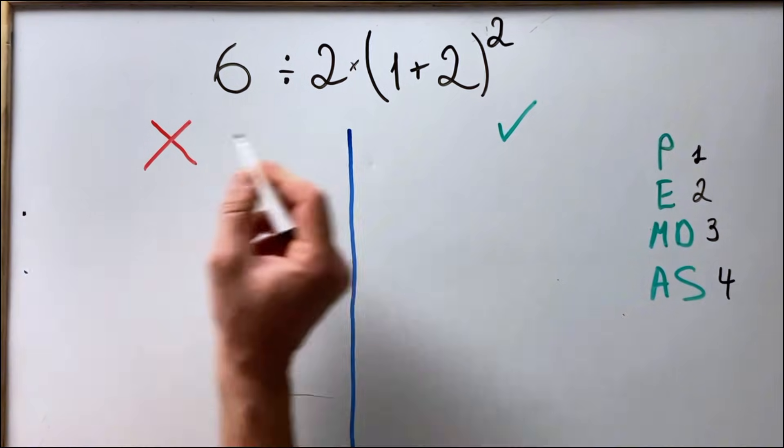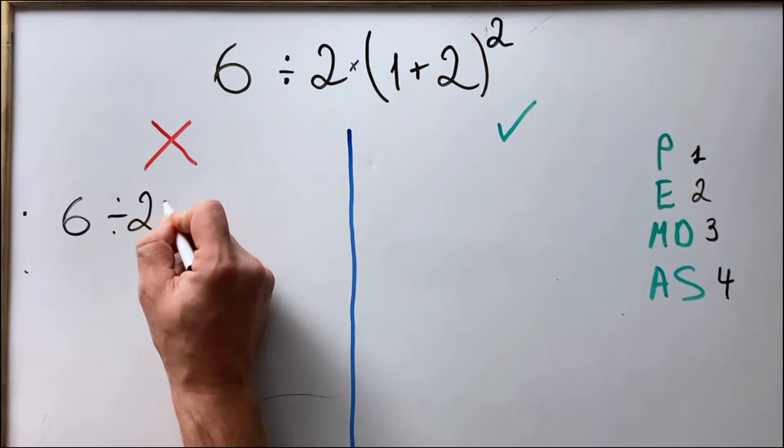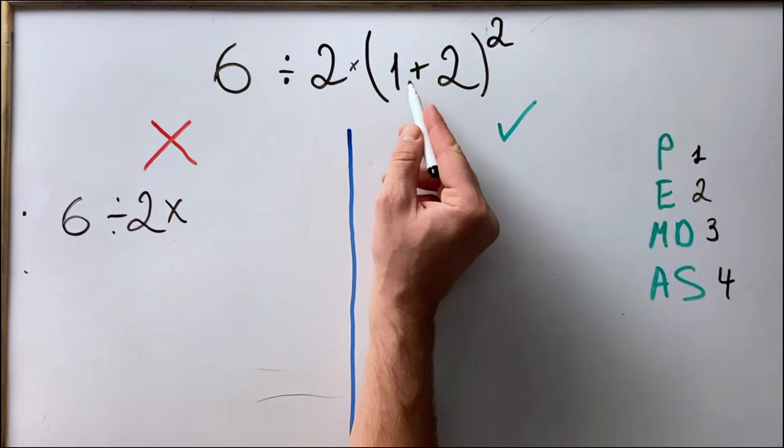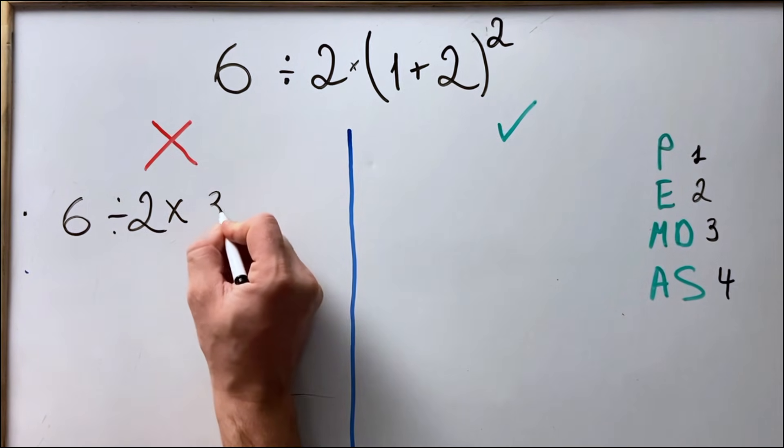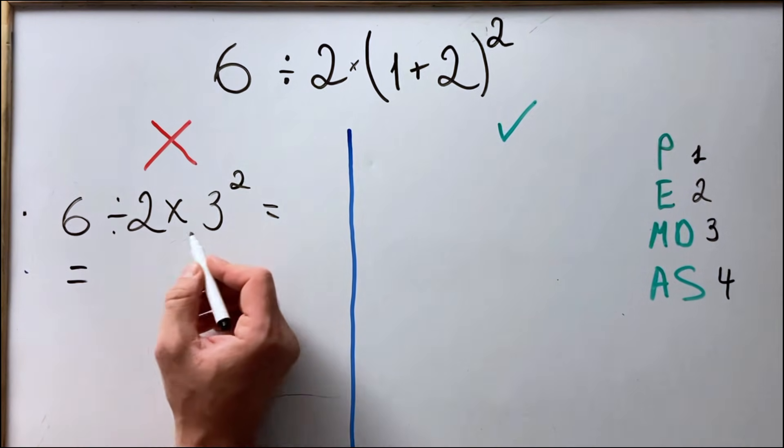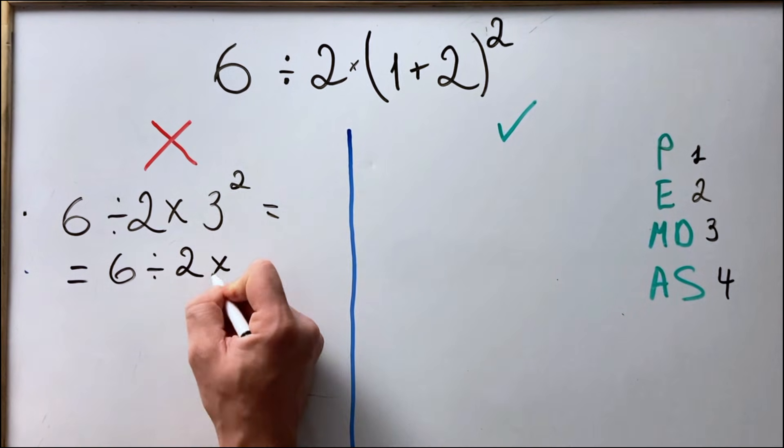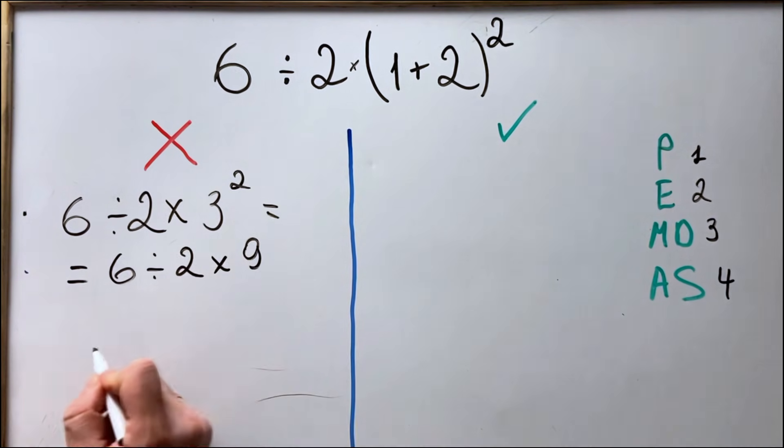So first they do the parenthesis, so we have 6 divided by 2 multiplied by (1 plus 2) which is 3, squared. Then we have 6 divided by 2 multiplied by 9, and here is the mistake that most people are doing.